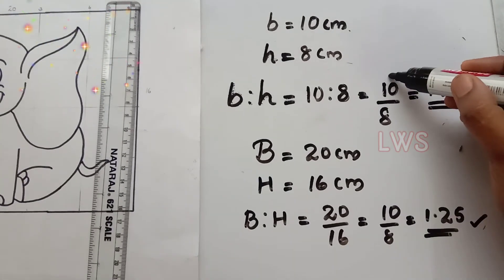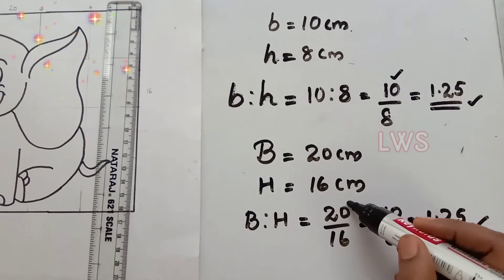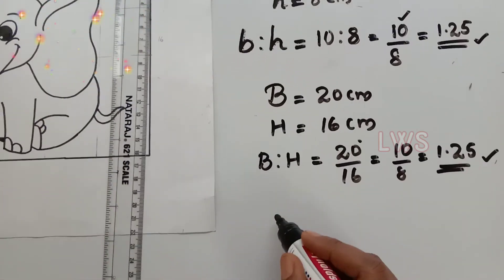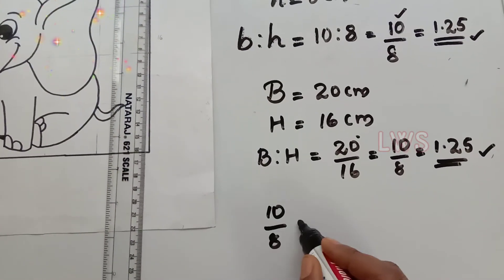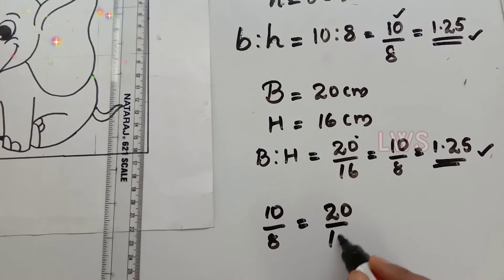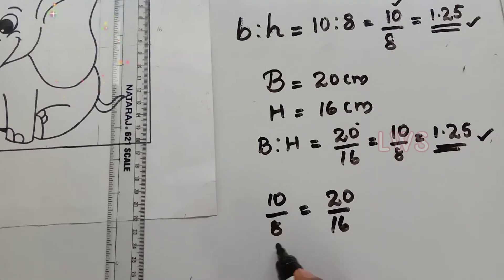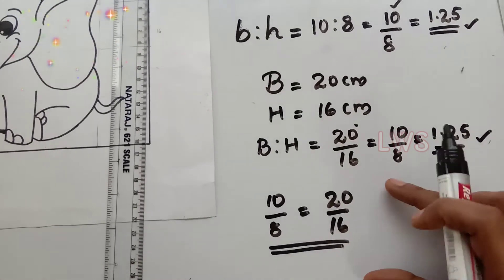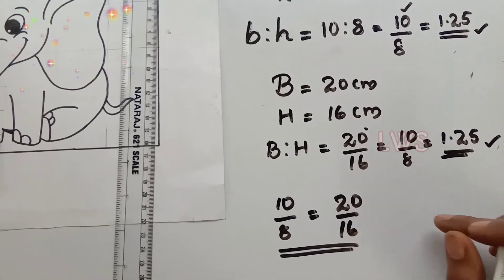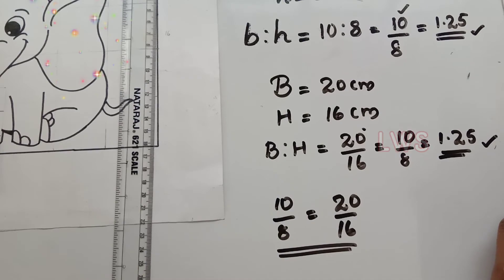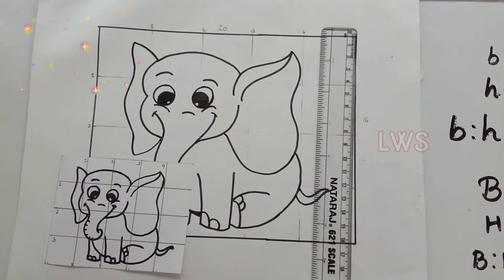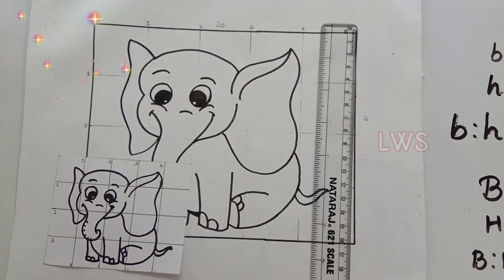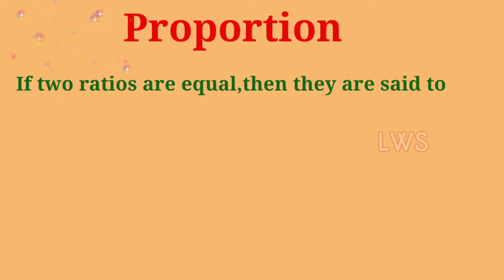Here we calculated two ratios: 10 is to 8 and 20 is to 16, and we got both values as 1.25. That means both of these ratios are equal. Here we learn a new concept in mathematics.